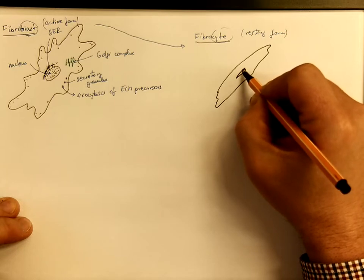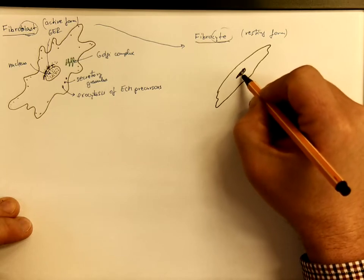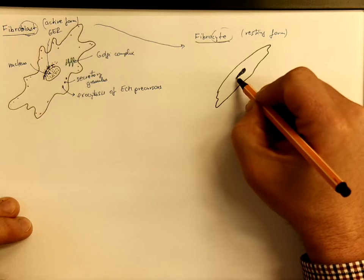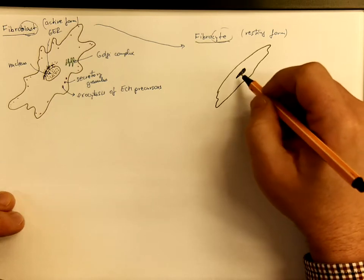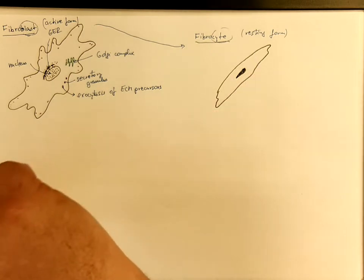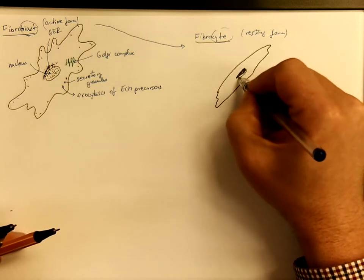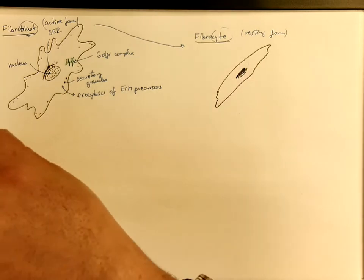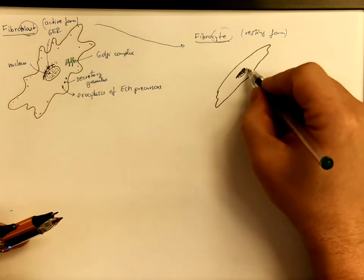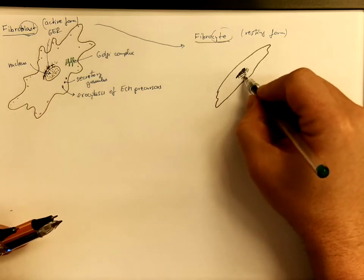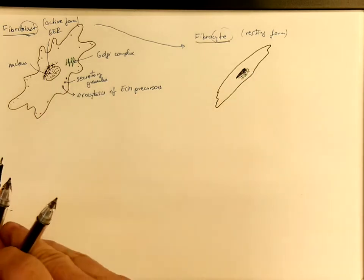The nucleus is mostly made of heterochromatin, so it is dense in the microscope. Usually one of the endpoints of the nucleus has a sharp form. And also the organelles necessary for protein synthesis and exocytosis are less developed when compared to fibroblasts.